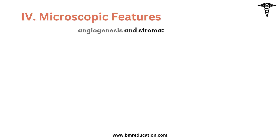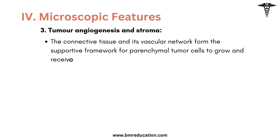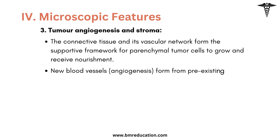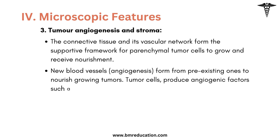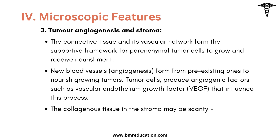The next feature in microscopy is tumor angiogenesis and stroma. The connective tissue and its vascular network form the supportive framework for parenchymal tumor cells to grow and receive nourishment. New blood vessels form from pre-existing ones to nourish growing tumors. Tumor cells produce angiogenic factors such as vascular endothelial growth factor (VEGF) that influence this process, and the collagenous stroma may be scant.